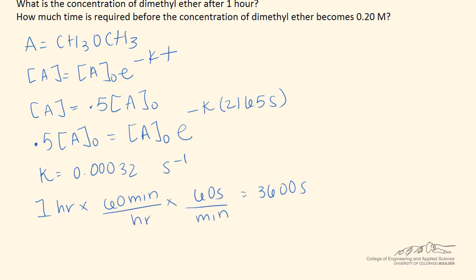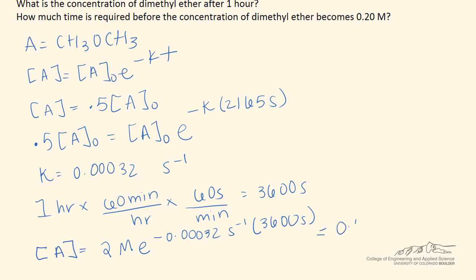We will use our first-order process equation again to find the concentration of A, which equals the original concentration of 2 molar times e to the negative kt, where k is 0.00032 inverse seconds and t is 3,600 seconds. We get that the concentration of dimethyl ether after one hour is 0.63 molar.